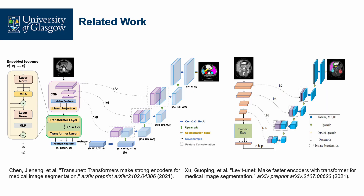We broadly categorize transformer-based medical image segmentation works into two categories. The first are CNN-transformer hybrids, such as TransUNet and Livy-IT-Unit. These works use CNN backbones to process medical images, and refine the features using transformer layers, and decode the segmentation map using a convolutional decoder.